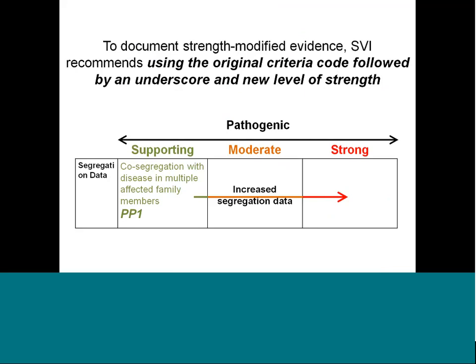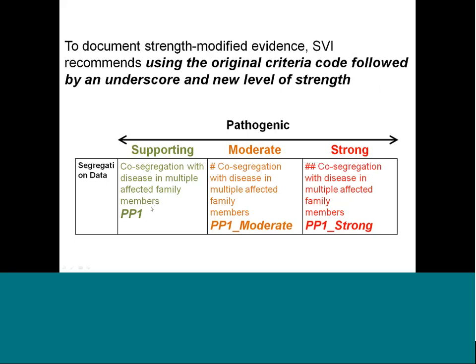The guidelines never provided direction for naming criteria when changing their strength. Within the SVI group, we recommend that when modifying criteria, you use the original criteria code followed by an underscore and then the new level of strength. For example, segregation data defaults to pathogenic supporting, which is PP1. If you elevate it to moderate, use PP1_moderate; if upgrading to strong, PP1_strong. We discourage groups from creating novel criteria codes unless that piece of evidence doesn't exist anywhere in the framework.